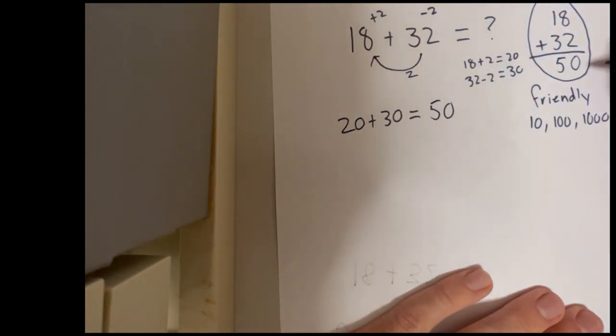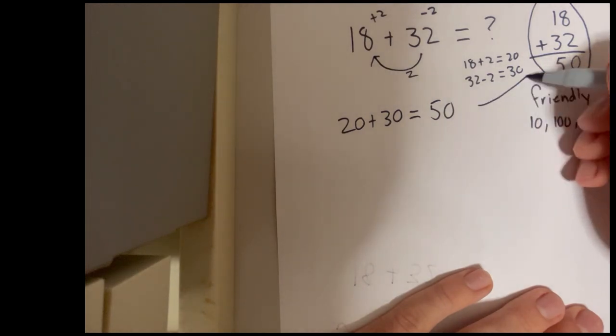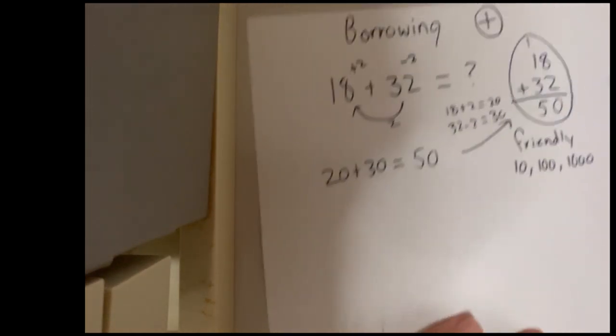And we have our same answer. Look, from over here, over to our beautiful egg. Now, this strategy is called borrowing.